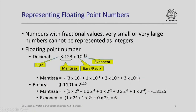We are going to have a bit for the sign, we are going to have the mantissa represented as a sequence of 0s and 1s — and of course we will have to agree on where to put the radix point. The base will always be 2 since we are talking about binary representation, and we will have the exponent which will be another binary number.